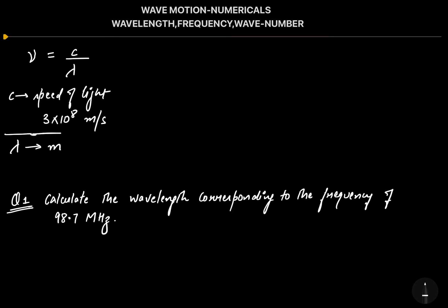Now, what is wave number? It is the number of waves formed in a unit distance length. Taking that unit distance to be one centimeter, wave number — represented by nu-bar — is always equal to 1 divided by wavelength. Here you must put the wavelength in centimeters, since wave number is the number of waves per centimeter.